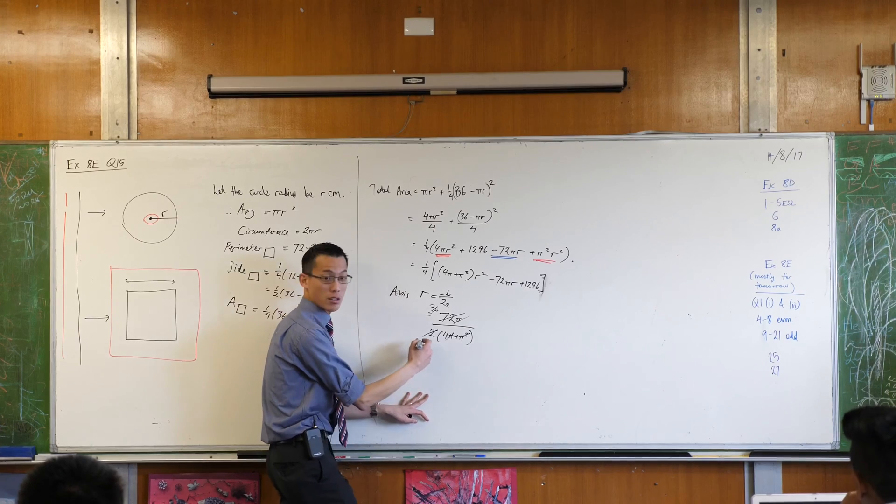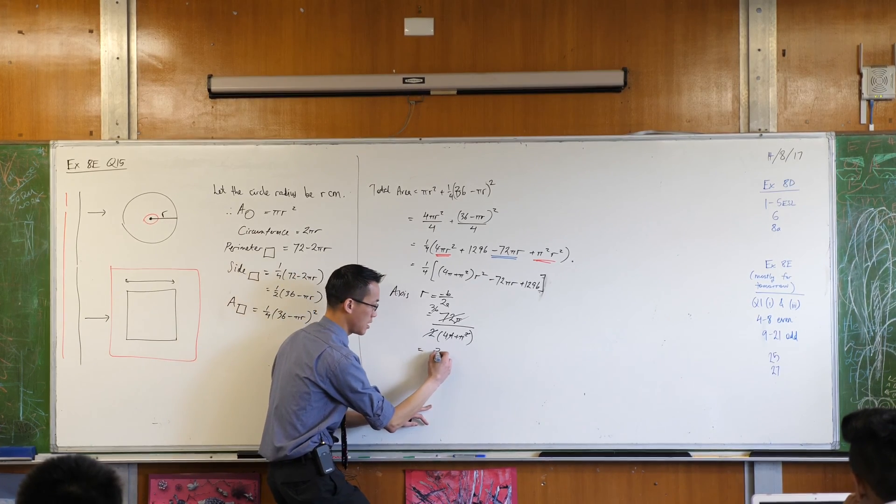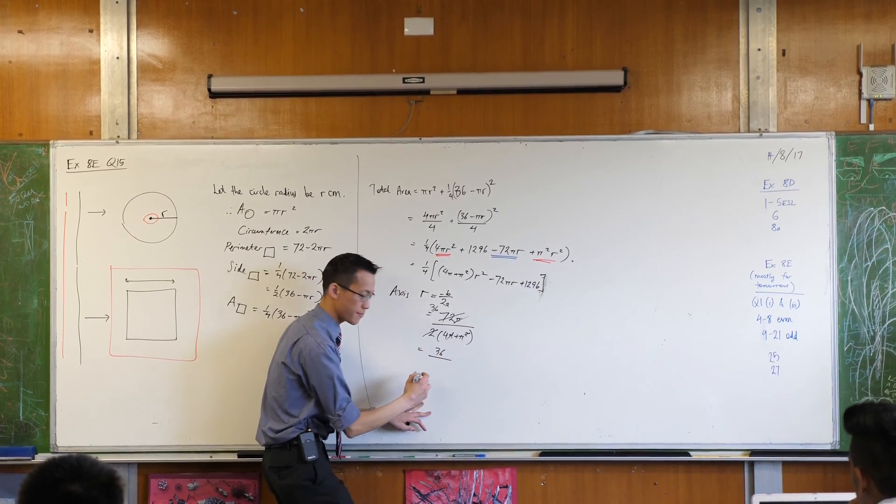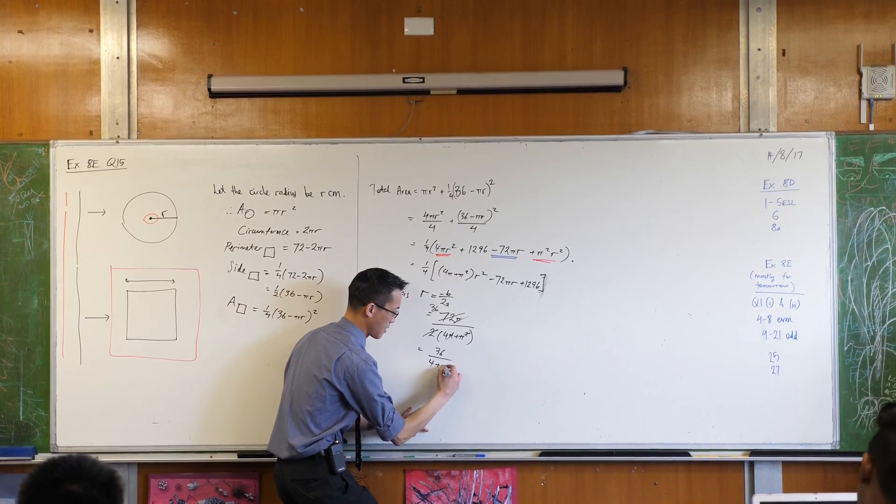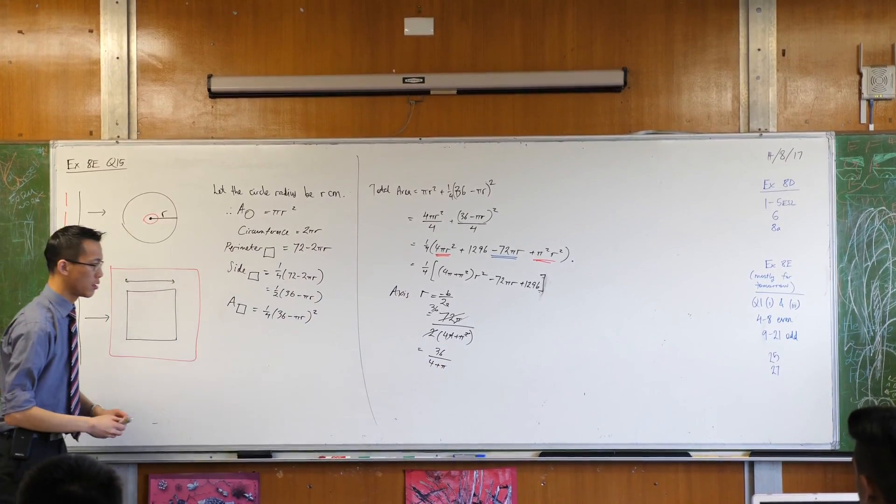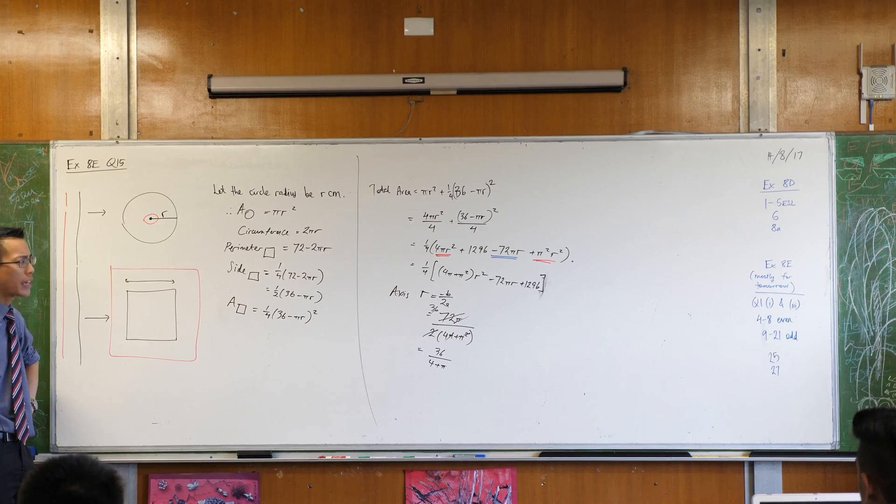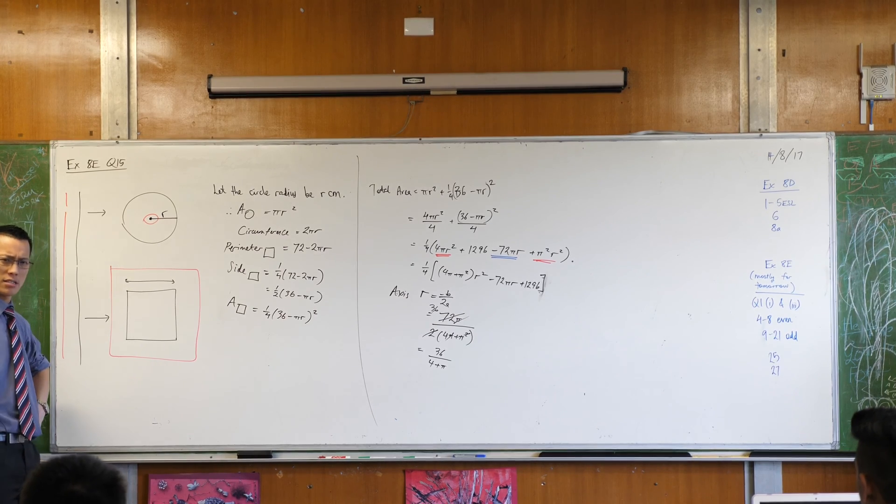So this leaves us with what's on the top? 36. What's left on the bottom? What does this mean? Is this the answer?